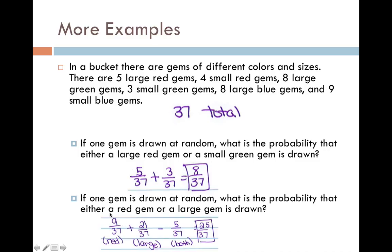The probability of red is 9 out of 37 because there are a total of 9 red gems. The probability of being a large gem is 21 out of 37. Because if we add up all the larges, there are 21 of them. And the probability of being red and large is 5 out of 37. So I have to subtract that.